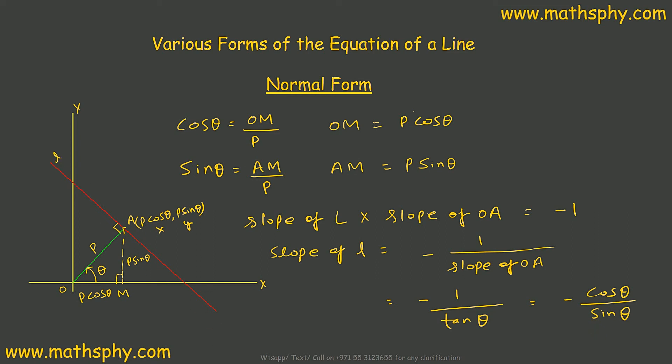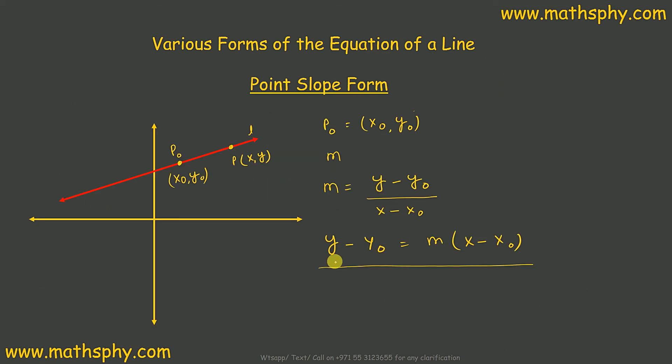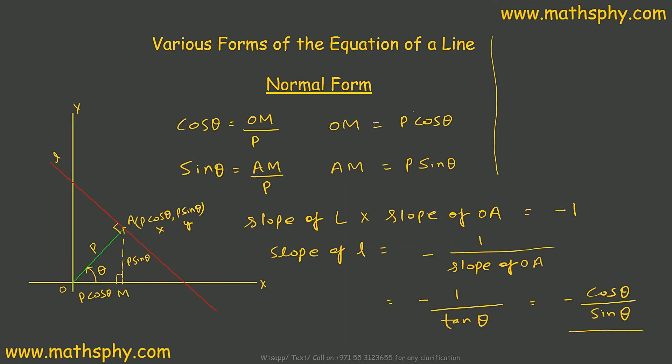In this line L, we know one of the points, which is A, and we know the slope also. In that case, I can use point-slope form equation. This here, I know one of the points and the slope. Why I need to know? Y would be P sin theta.